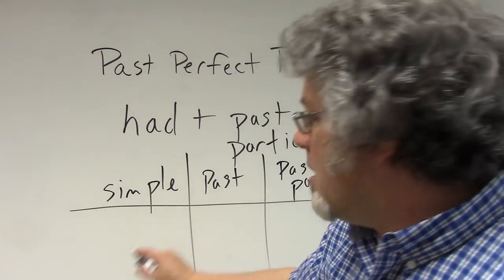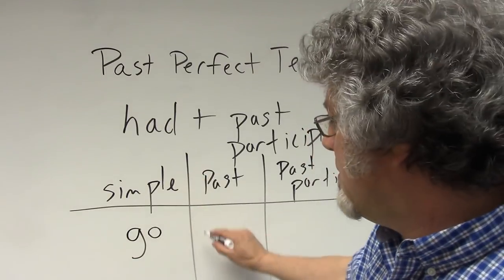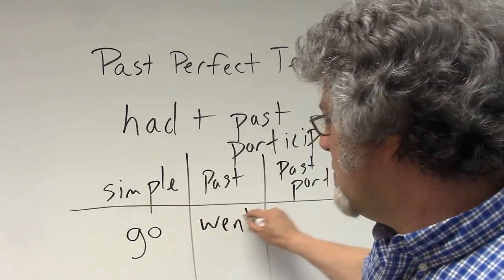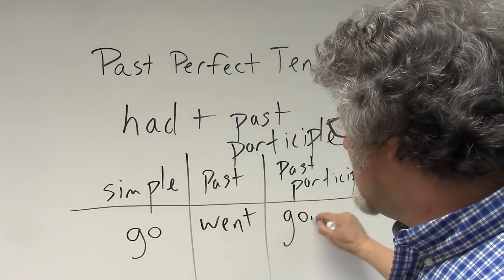Take, for instance, the verb 'go.' Go is in the simple form, the past tense is 'went,' and the past participle is 'gone.'